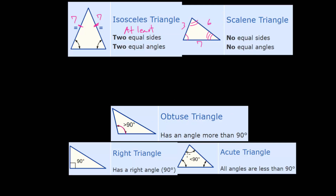Likewise, if the triangle contains only acute angles — where acute angles are less than 90 degrees — then the triangle itself is called an acute triangle. When defining triangles by angles, you want to figure out which angle is the biggest. If all angles are less than 90 degrees, less than a right angle, then we can say it's an acute triangle. And if the biggest angle in the triangle is exactly 90 degrees, exactly a right angle, then the triangle is called a right triangle.